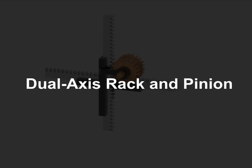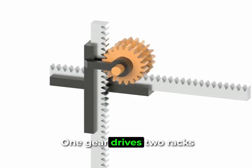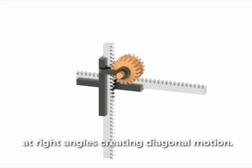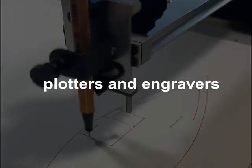Finally, the dual-axis rack and pinion. One gear drives two racks at right angles, creating diagonal motion. It's used in plotters and engravers.